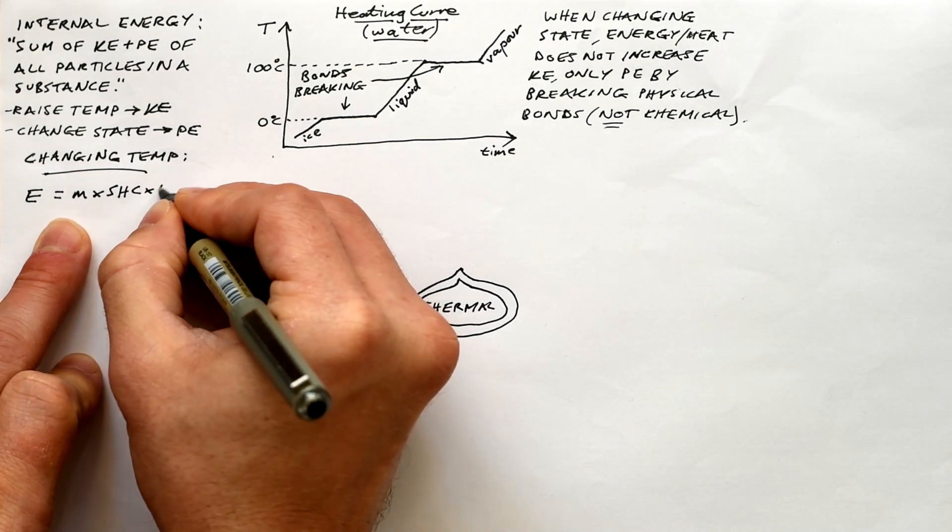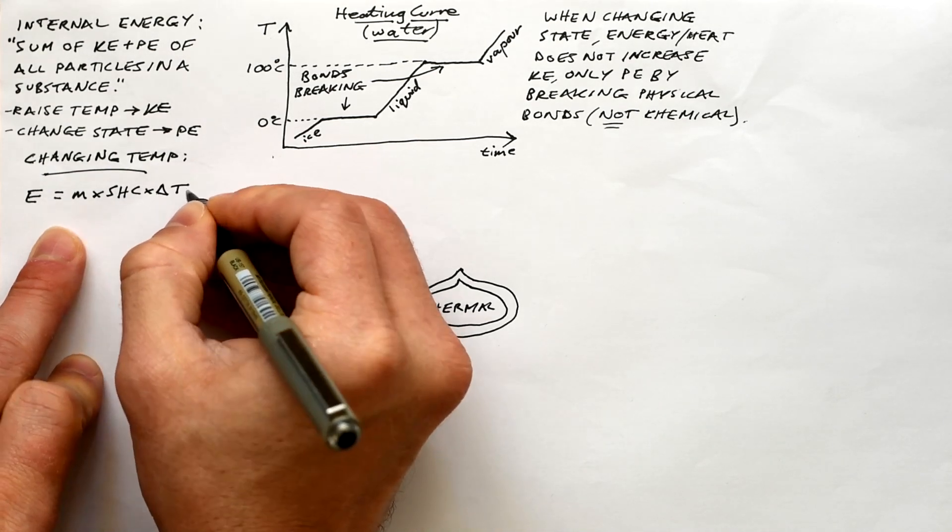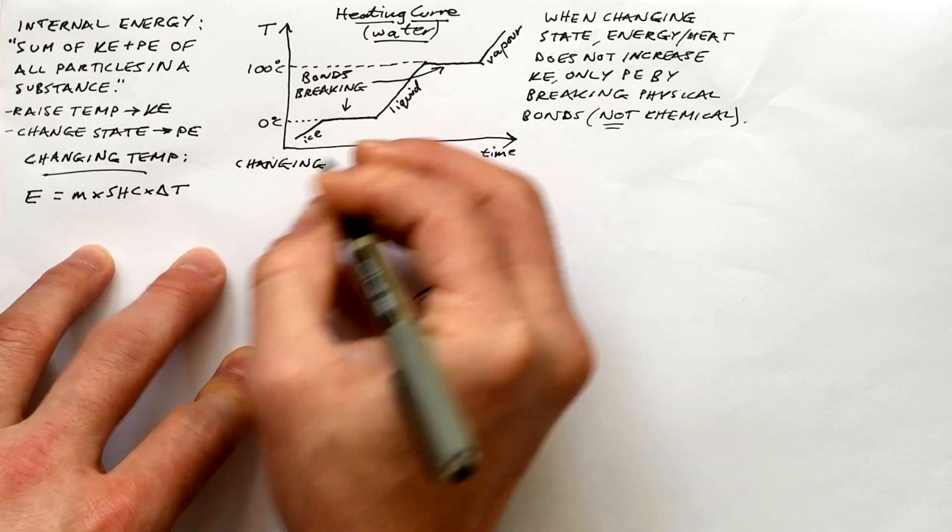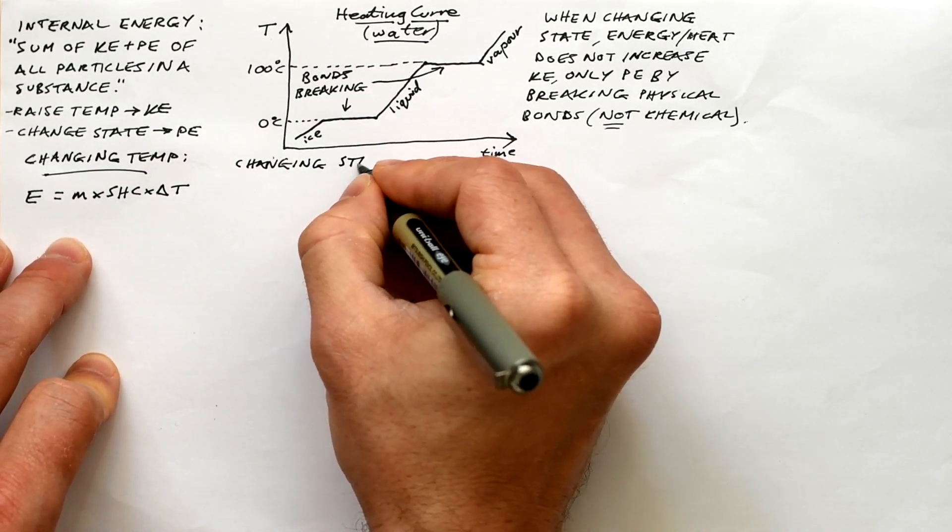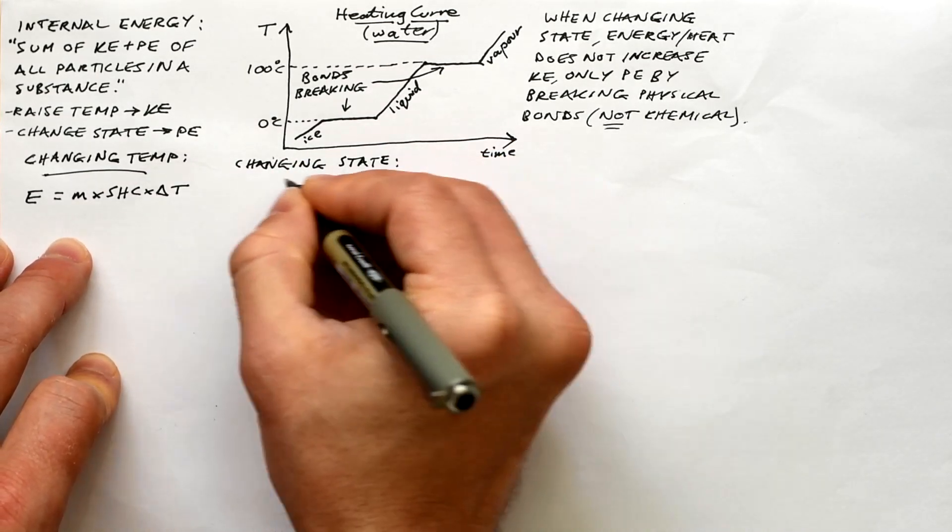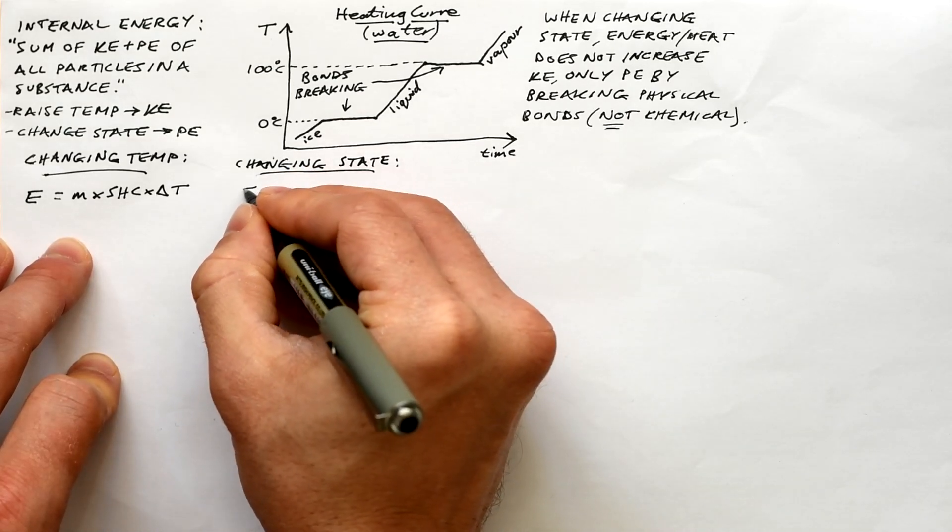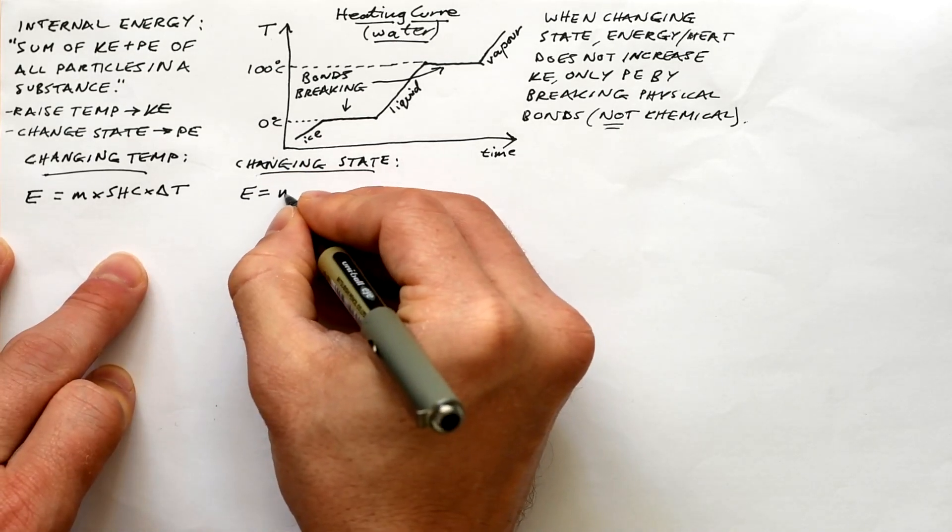We have an equation that tells us how much energy is needed to raise the temperature of a substance. It's E, you might see Q, but I like E because it's energy, equals mass times specific heat capacity, that's specific to the material, times the change in temperature delta T.